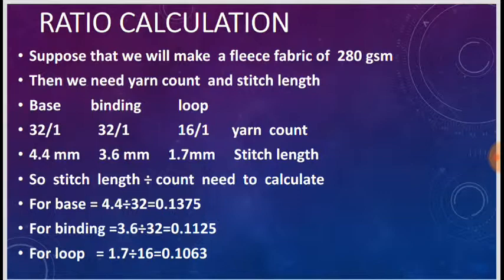Stitch length divided by count is calculated for each yarn. For base: 4.40 divided by 32 = 0.1375. For binding: 3.60 divided by 32 = 0.1125. For loop: 1.70 divided by 16 = 0.1063.